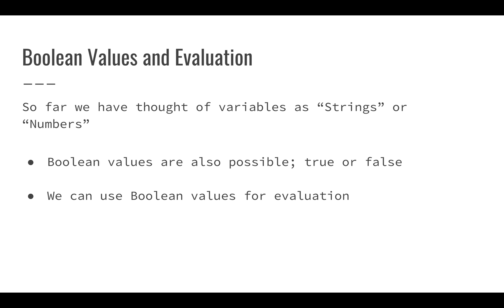Now, we also have Boolean values that we have to think about, because once we get into if statements, we have to evaluate things as Booleans. We've thought about strings, which are text, and numbers that are integers or decimal point numbers. Boolean values are also something we can have. Boolean is simple — it's just true or false. We use Boolean values for evaluation, and as we continue through this series, you'll see that we can use them for lots of applications.